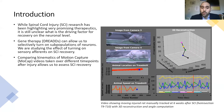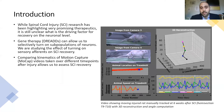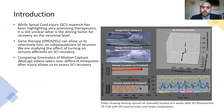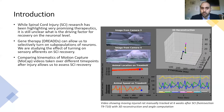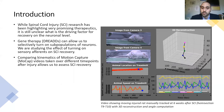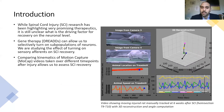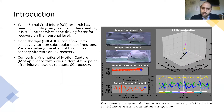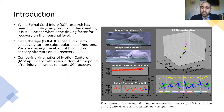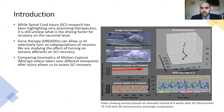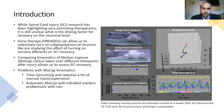One way to assess spinal cord injury recovery is to compare kinematics of motion capture videos taken over different time points after the injury and compare them to a baseline, so we can assess how quickly and how efficiently this recovery is happening.